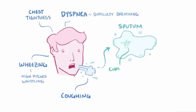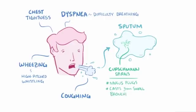Occasionally in the sputum, there might be Curschmann spirals, which are spiral-shaped mucus plugs or basically elongated mucus casts from the small bronchi of people with bronchial asthma.